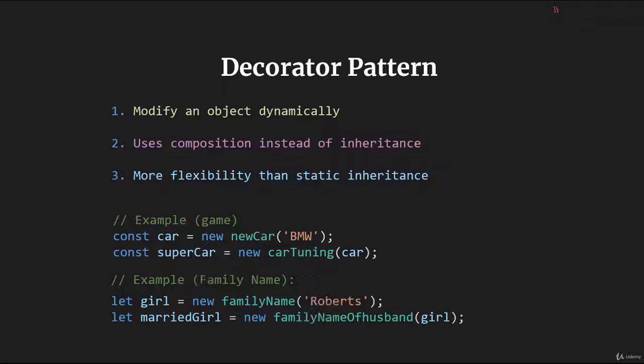Another example: we are creating a new girl object with family name Roberts. But due to the familyNameOfHusband class, you can set another family name to this girl.